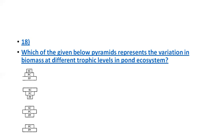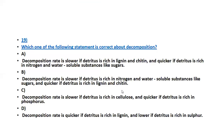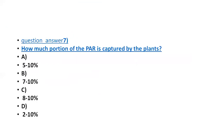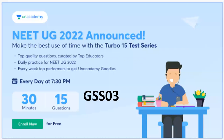These are a few questions from the ecosystem chapter. I hope you got some useful information from this video. If you want to practice more questions like these, please follow my free classes on Unacademy. The Unacademy turbo quiz happens every day at 7:30 PM — 30 minutes, 15 questions. The referral code is GSS03. Don't forget to enroll. Thank you very much, bye.